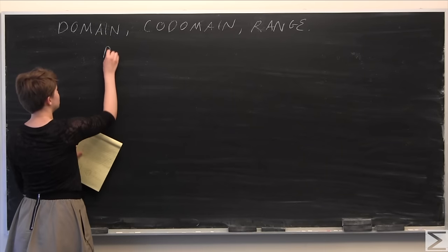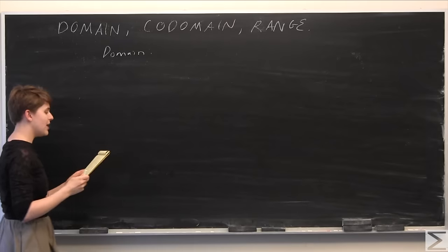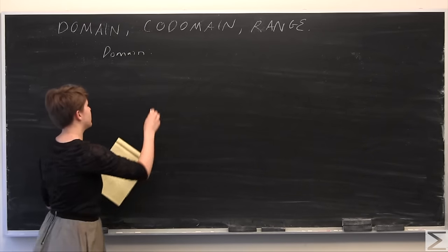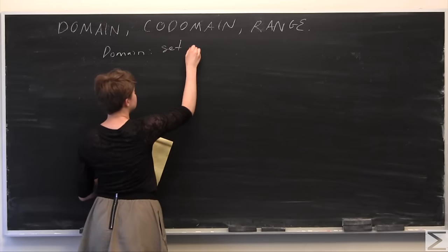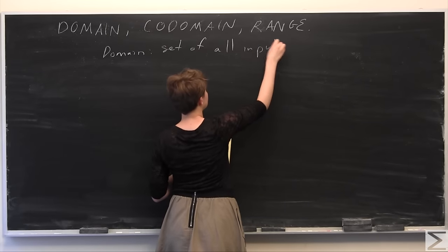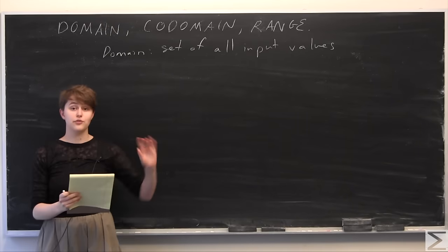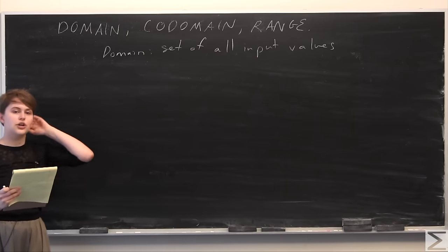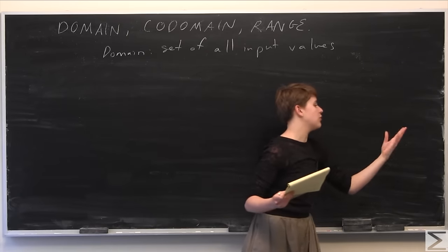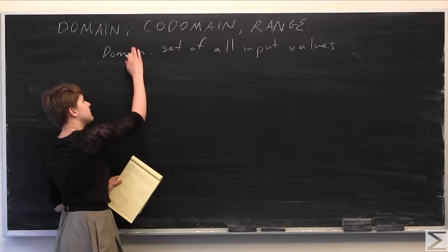So the domain, which you're probably familiar with, is a set of all possible input values for a given function. So it's what the function can accept — what the function is defined on. That will become clear when I start going through examples.